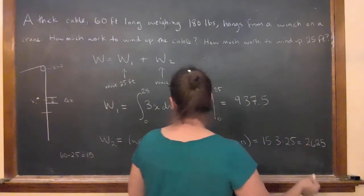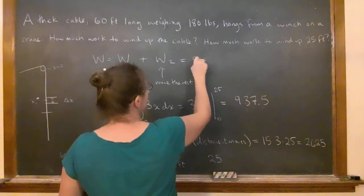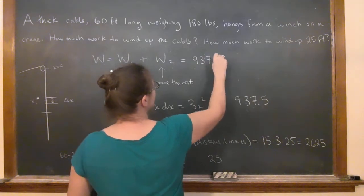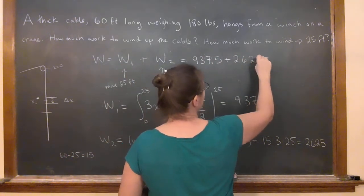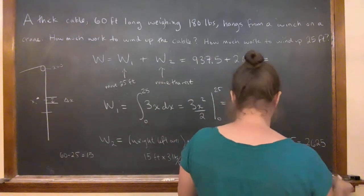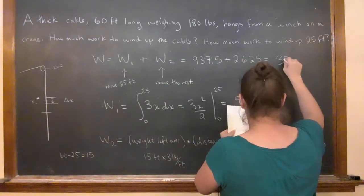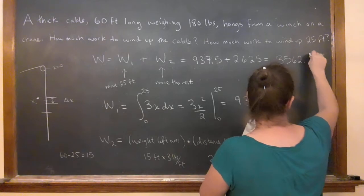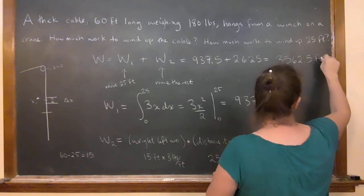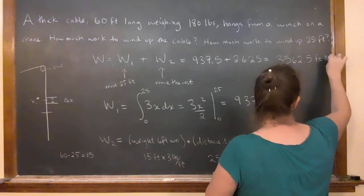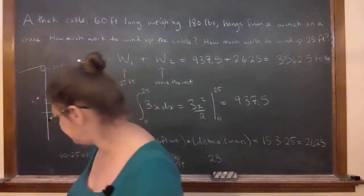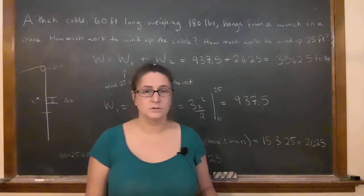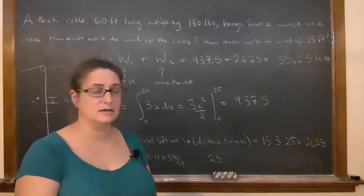So my total work is going to be 937.5 plus 2625, which is 3,262.5 foot-pounds. So at least that makes sense. It's less than putting up the whole thing, but it's bigger than, significantly bigger than half. So that's how you have to think about those.